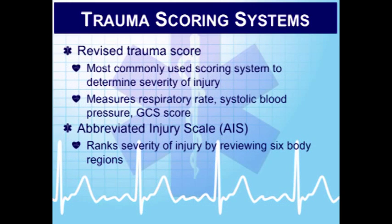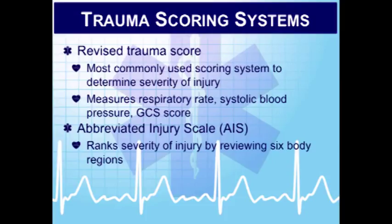The revised trauma score is used to determine the severity of injury, looking at respiratory rate, systolic blood pressure, and the Glasgow Coma Scale, with numbers from 0 to 13. The worse off the patient, the lower the score. It's impractical in the pre-hospital environment and used more efficiently in-hospital. It doesn't readily identify the small percentage of severely injured trauma patients whose vital signs don't actually reflect their actual condition. Many of our patients have compensatory mechanisms maintaining their vital signs in the early stages of shock, so clinical assessment using our brains and skills is essential.